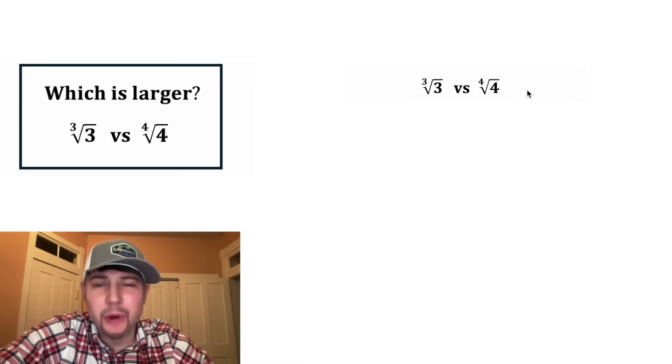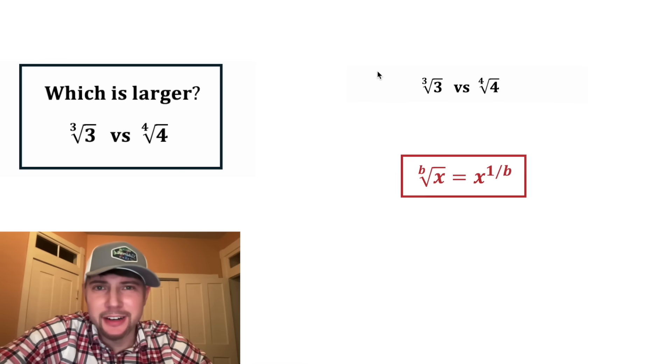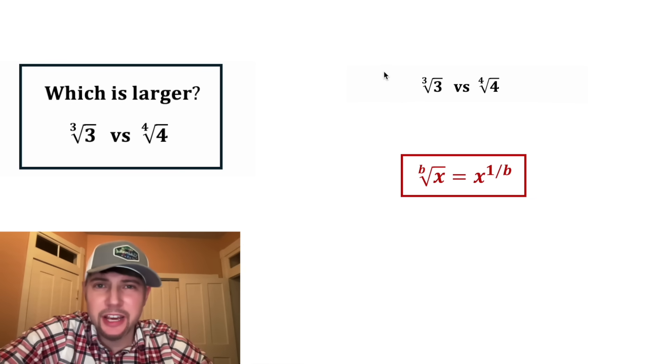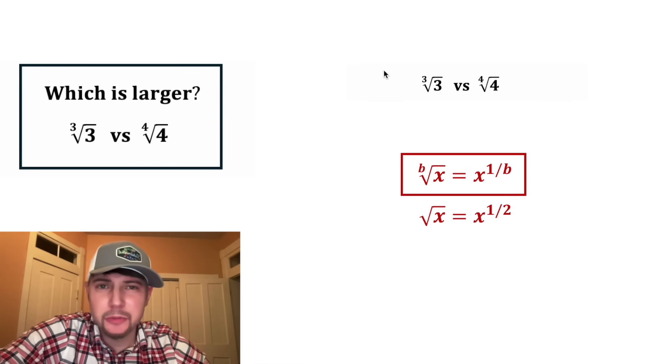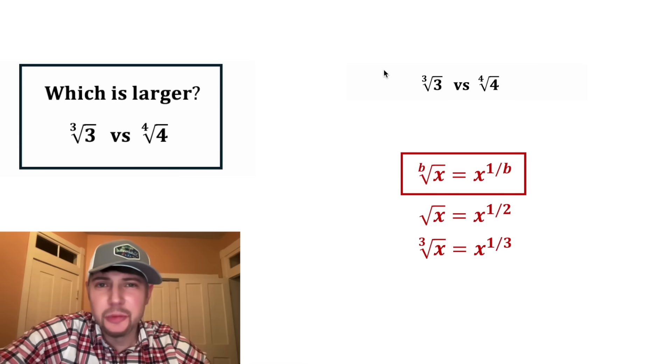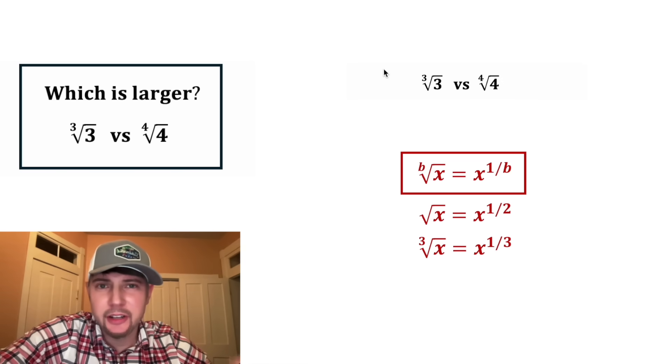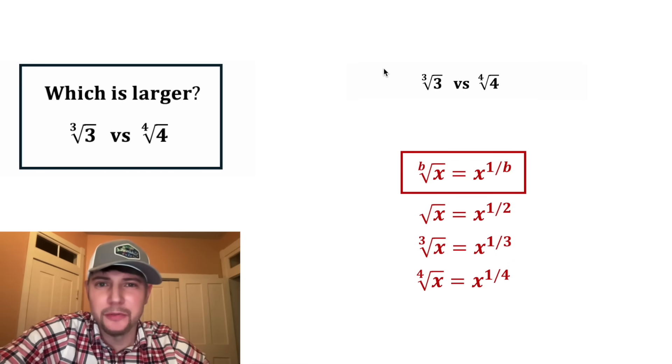First, let's write this in rational exponent form. Here are the notes right here. The bth root of x is equal to x to the power of one over b. So for example, the square root of x would be x to the 1 half. The cube root of x would be x to the 1 third. And the fourth root of x would be x to the 1 fourth. And so on.